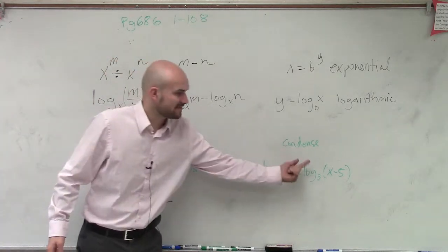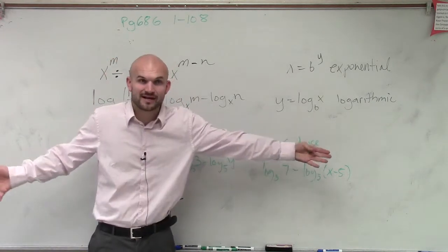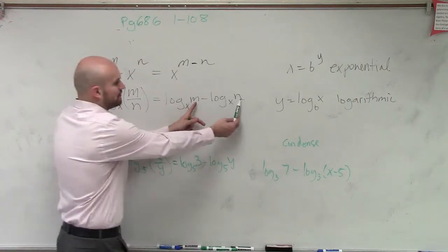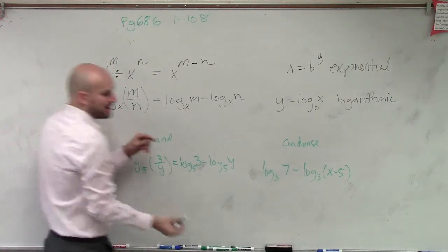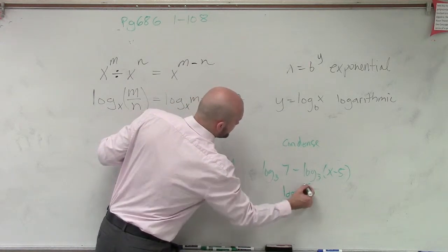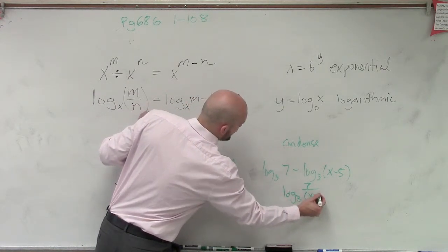And then this one is, if I want to condense it, that means it's already expanded. So can I rewrite this as one logarithm? Yes. When you subtract the two, that means you can rewrite it as a division problem. So therefore, this is log base 3 of 7 over x minus 5.